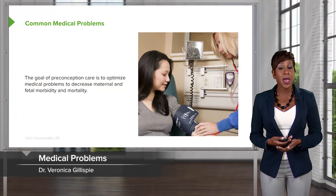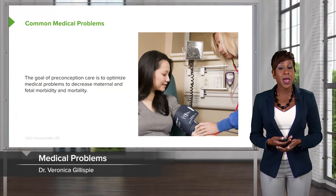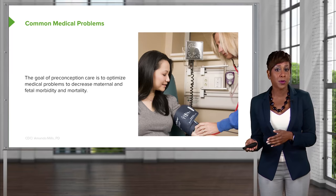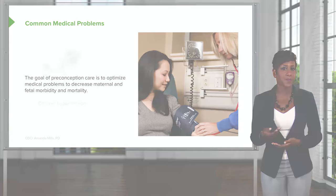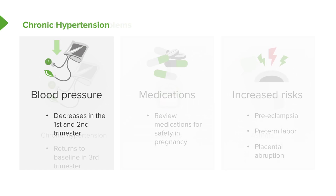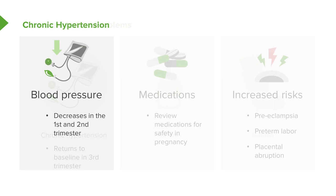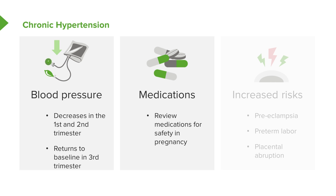There are medical problems we often have to address in pregnancy. The goal of preconception care is to optimize medical problems to decrease maternal and fetal morbidity and mortality. One issue we need to address is chronic hypertension. In pregnancy, during the first and second trimester, blood pressure often decreases. So patients on chronic hypertension medications may not need them at the beginning of pregnancy, but may need them later on. Third trimester blood pressures usually return to pre-pregnancy levels. We need to review a patient's medications prior to pregnancy to ensure they are safe.